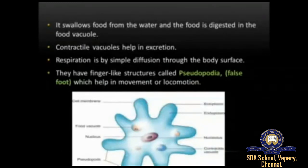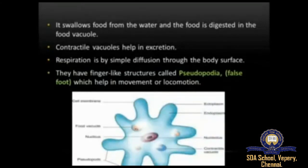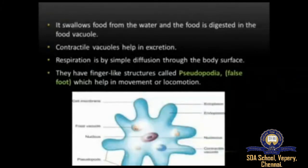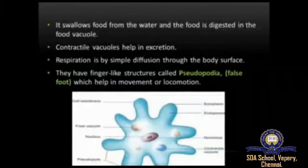Respiration is the process of breathing — the inhaling of oxygen and exhaling of carbon dioxide. Amoeba has finger-like structures called pseudopodia, also called false feet, which help in movement or locomotion, allowing amoeba to move from one place to another. The food vacuole swallows food from the water and digests it, while the contractile vacuoles help in excretion.